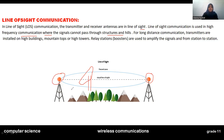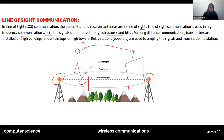For long distance communication, transmitters are installed on high buildings or towers with antennas attached. Relay stations and boosters are used to amplify the signals from station to station. You take the signal, amplify it using a booster, and send it to the next station on the mountain. This way, the signal is boosted repeatedly from station to station to achieve long distance communication.